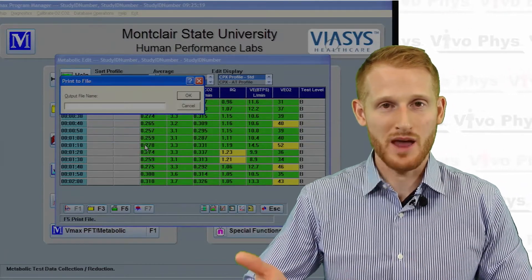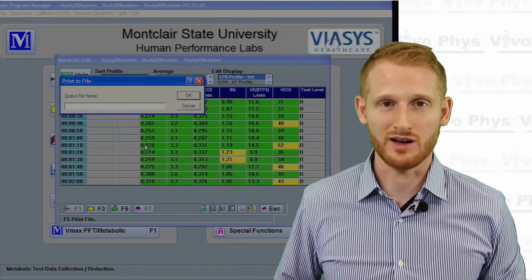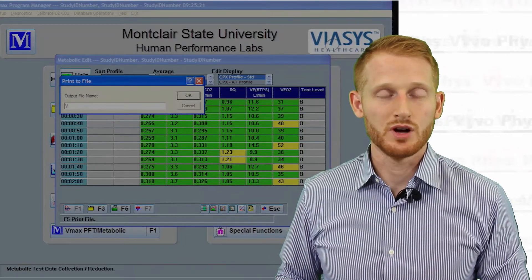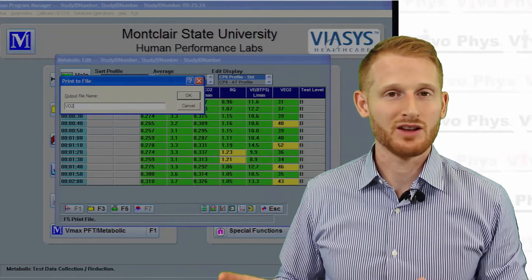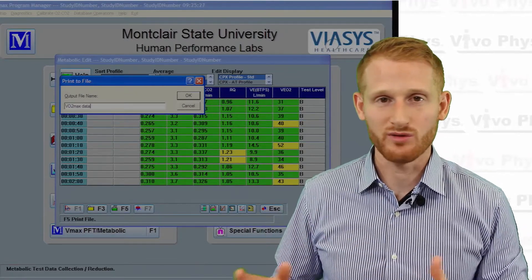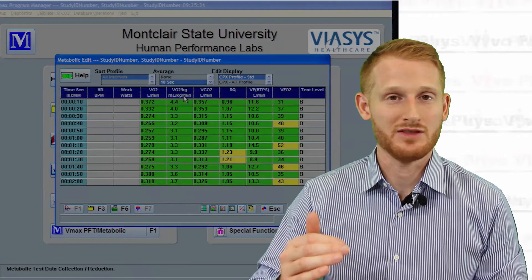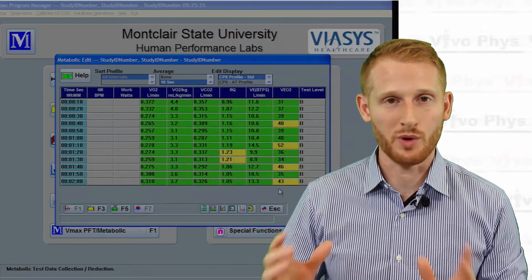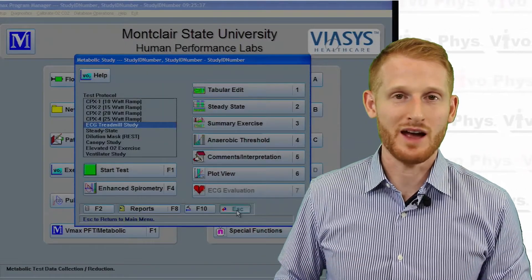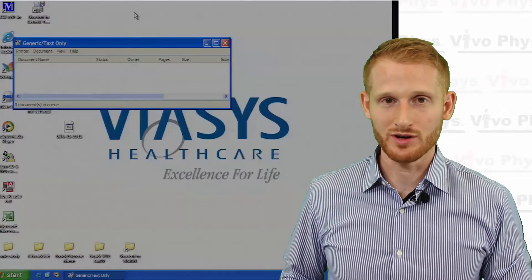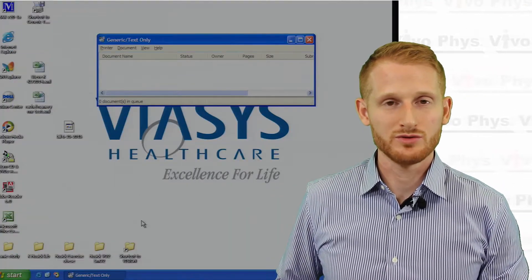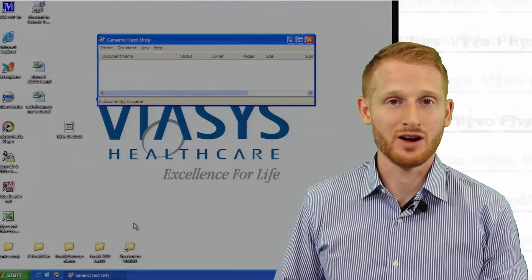It's going to essentially print those results as a text file, so it's not going to actually print a paper document but it's going to create a text file for you. Once you hit that print button, it's going to bring up a dialog box to give it a file name. Give whatever file name you want, click OK, and then just go ahead and hit the prompts to exit all the different windows of the software and get it back to the desktop of the computer.